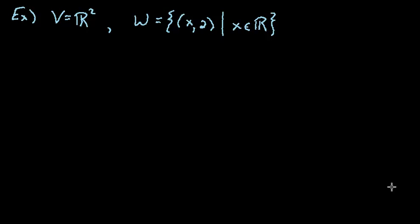So in this example we've got V equals R², so we're in the Cartesian plane, and we recall from previous videos that this is certainly a vector space.